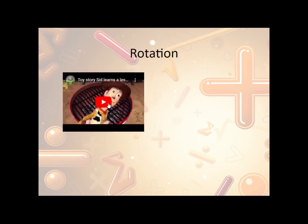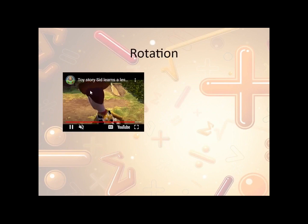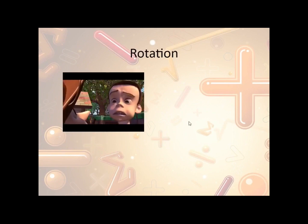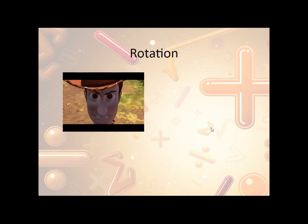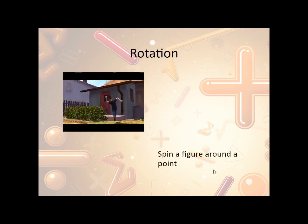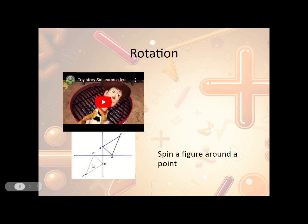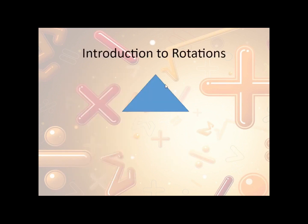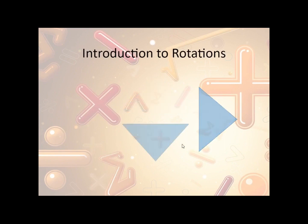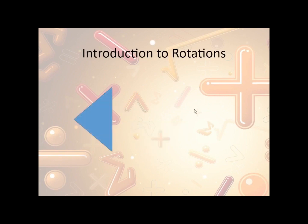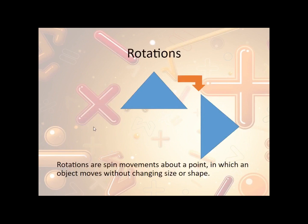Now, what is a rotation? A rotation looks like this — we have Woody's head here, and it spins around. Rotations are spin movements — a spin of a figure around a point. We have a triangle here; if we were to spin it, it ends up being this triangle here. If we were to spin it to the right, it would look like that, and again, and again. Rotations are spin movements about a point, and the object doesn't change size or shape, but it does change direction.